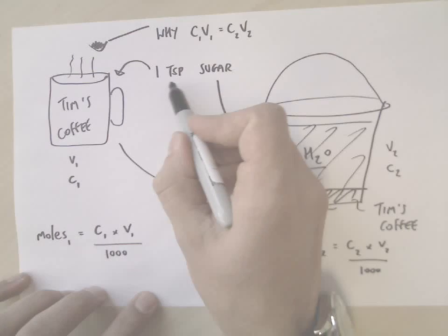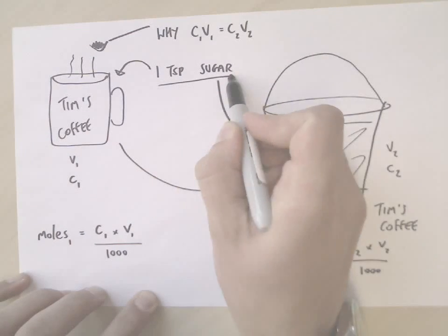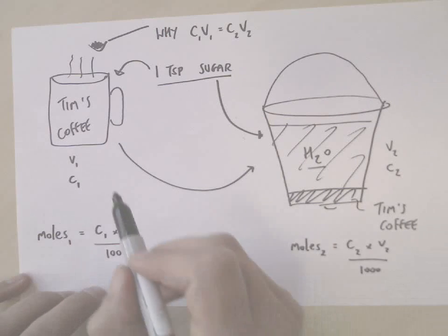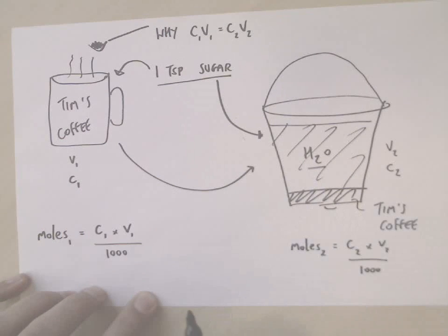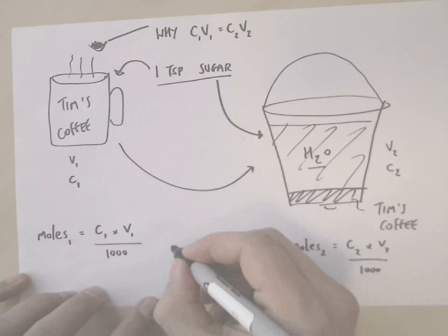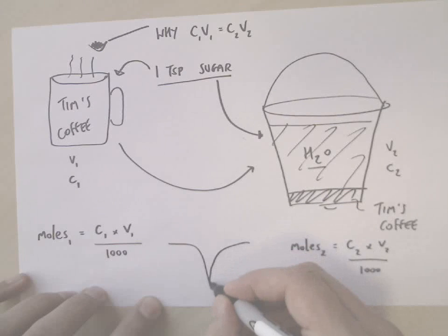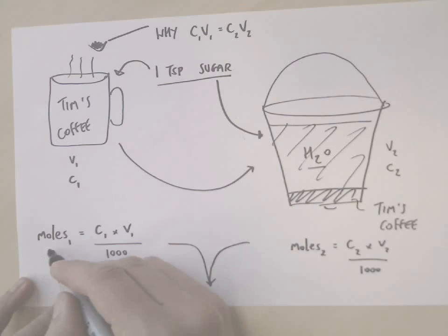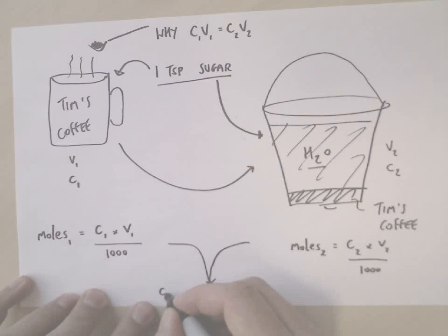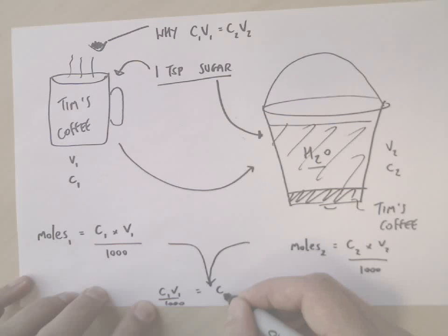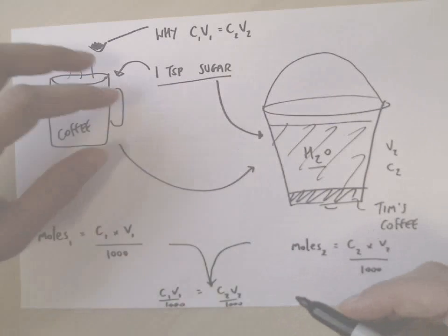But I've just told you that the amount of sugar or the number of moles of sugar at the beginning is the same as at the end, so we can combine these two equations because the moles of one equals the moles of two. So you end up with C1V1 over a thousand equals C2V2 over a thousand. The thousands simply cancel out.